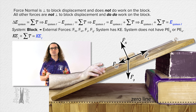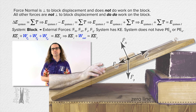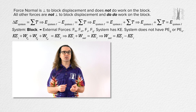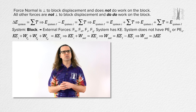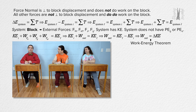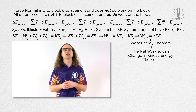Remember, energy is transferred into or out of the system via work done on the system by forces external to the system. The energy transferred into or out of our block system is equal to the work done by the spring force, the work done by the force of gravity, and the work done by the force of kinetic friction. The sum of all those works is the net work done on the system. We can subtract the kinetic energy initial from both sides: kinetic energy final minus kinetic energy initial equals the change in kinetic energy. We are left with net work equals change in kinetic energy — which is the Work-Energy Theorem.